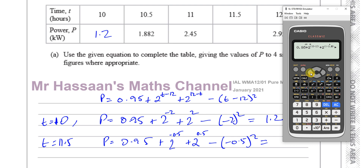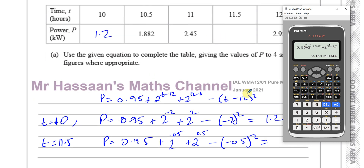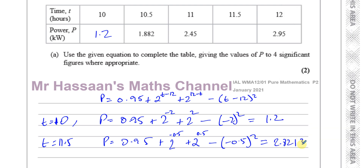Be careful — the 12 stays as 12. So I have 11.5 minus 12, and 2 to the power of 12 minus 11.5, and minus 11.5 minus 12 squared. That gives 2.82132, and to four significant figures that becomes 2.821. So the table is now complete.